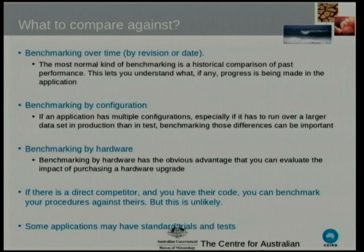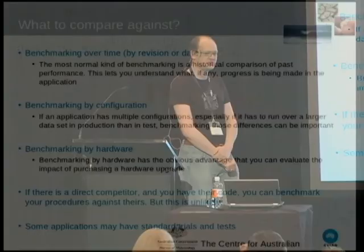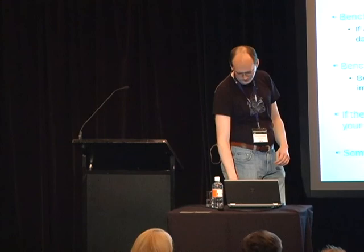So what do you compare against? Comparison over time is one of the most straightforward kinds of comparison. But you have a lot of other options. Configuration is relevant for us because we deploy to different places with different amounts of geography — so our data sets are very different. Or you can benchmark by hardware. If you've got a direct competitor, especially in open source, you can do comparison plots. And some applications may even have standard trials and tests — obvious ones being like ACID 3 tests for HTML compliance.